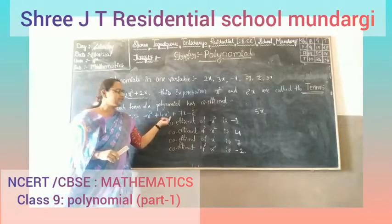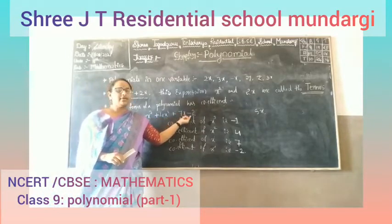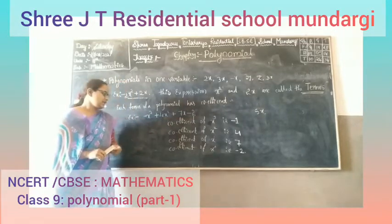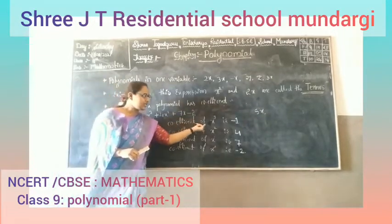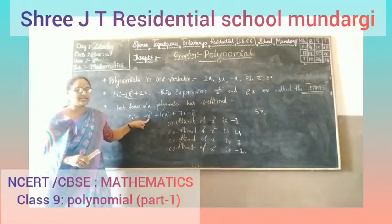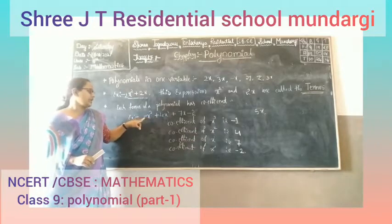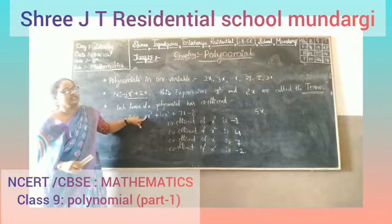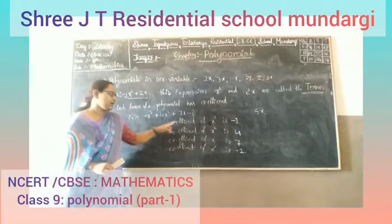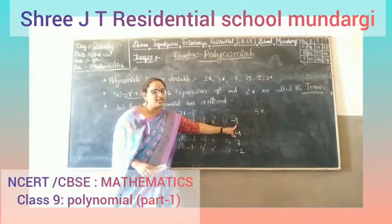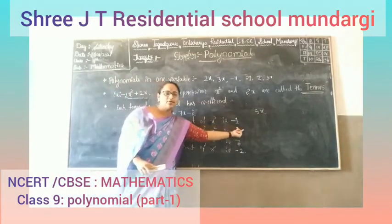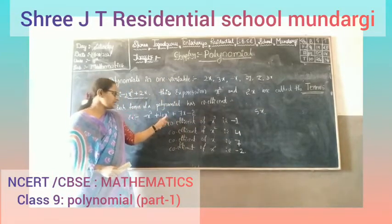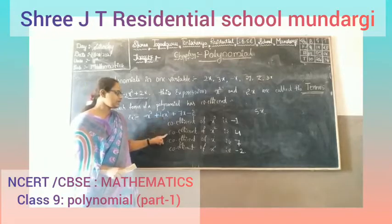Let me take another example: minus x cubed plus 4x squared plus 7x minus 2. The coefficient of x cubed is minus 1, because it is written as minus x cubed. The coefficient of x squared is 4.